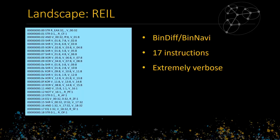REIL from Zynamics only has 17 instructions, so it produces the most horrific IL you'll ever see if you want to debug it. It lacks type information and other things you'd want from a reverse-engineering IL. But for their purpose of binary diffing, it works fairly well — Bindiff is still one of the main tools for binary diffing because of this intermediate representation. It may not work for all cases, but it worked for that particular problem.